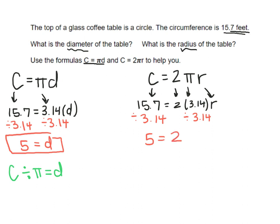I still need to perform one more inverse operation, so I'm going to divide both sides by 2 since 2 is being multiplied with R. 5 divided by 2 will give me 2.5, so 2.5 is equal to the radius.